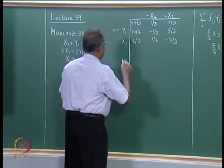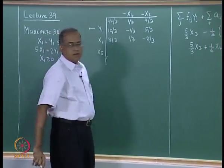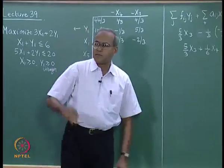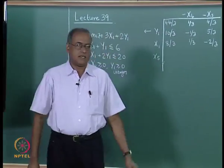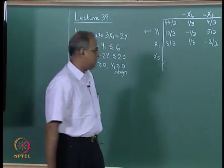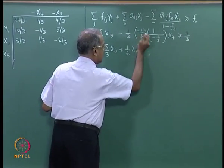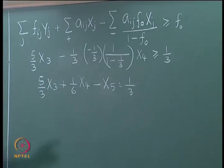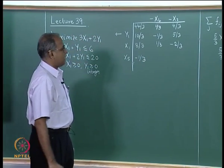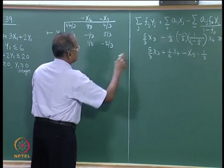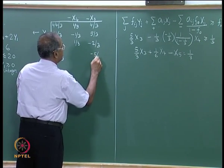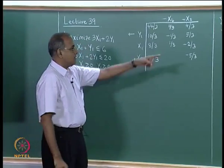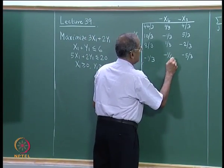We introduce a new variable X5 as a result of the MILP cut. X5 is a surplus variable added to convert the greater-than-or-equal-to inequality to an equation. Taking X5 to one side and 1/3 to the other side, X5 becomes minus 1/3 plus 5/3·X3 plus 1/6·X4, giving us X5 equals minus 1/3 plus 5/3·X3 minus 1/6·X4.